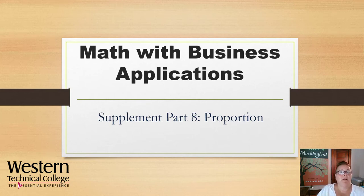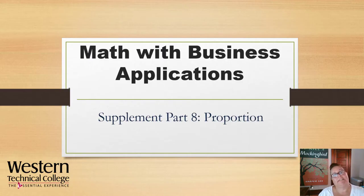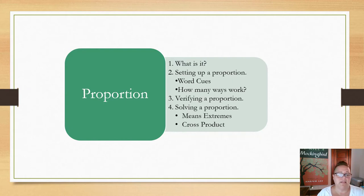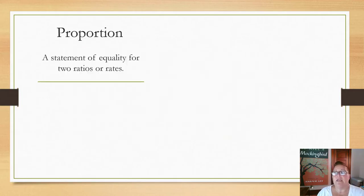Welcome back. We're going to do math with business applications today, working on the supplement part eight — we're going to talk about proportions. What we'll cover: what a proportion is, how to set one up using word cues, how many different ways there are to set one up, how to verify whether a proportion is true or false, and how to solve proportions. The means extremes theorem is really just cross multiplication.